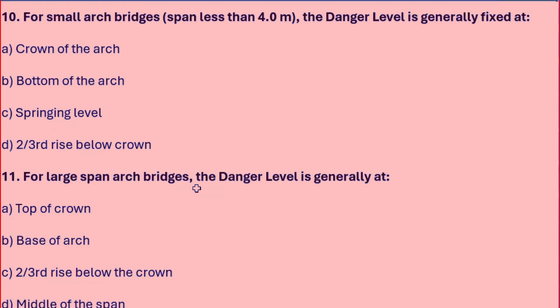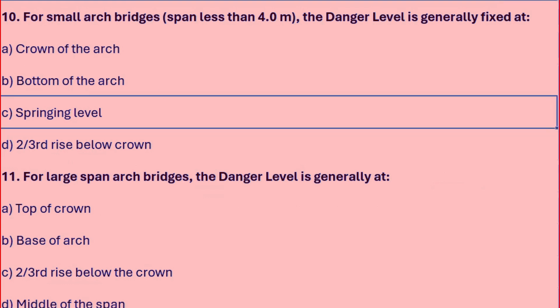For a small arch bridge with a span less than 4.0m, the danger level is generally fixed at: crown of the arch, bottom of the arch, springing level, or two-thirds rise below crown. The right answer is the springing level.